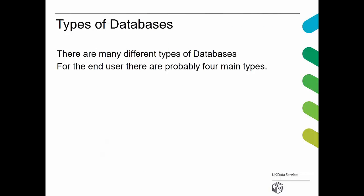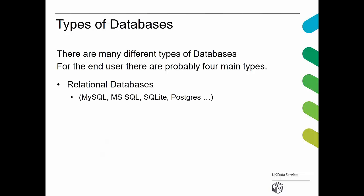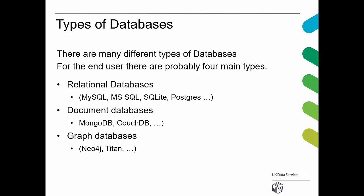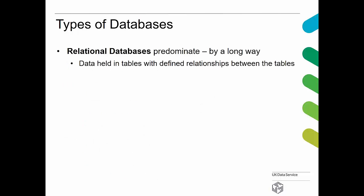There are four main types of databases. We have relational databases, which are by far the majority; document databases; graph databases; and wide-column stores. We won't be considering wide-column stores — we'll look at relational, document, and graph databases. Relational ones predominate by a long way. Data is held in tables, and relationships are defined between tables to enable joins.